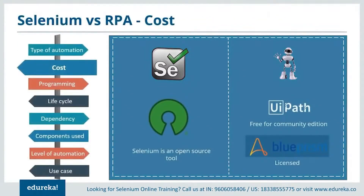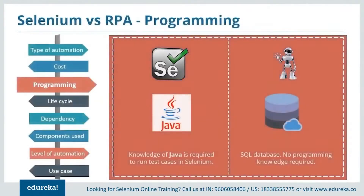Now let's talk about the cost of these tools. Selenium is an open source tool used to automate web applications. RPA has a set of tools like UiPath, Automation Anywhere, and Blue Prism. Among these, UiPath is free for the community edition and advanced versions are licensed. Automation Anywhere gives you a free trial for a month and advanced versions are licensed as well. Blue Prism is completely licensed. Regarding programming knowledge, Selenium requires knowledge of Java to run any test case, whereas RPA does not require any coding knowledge as it deals with back-end processes and database operations.